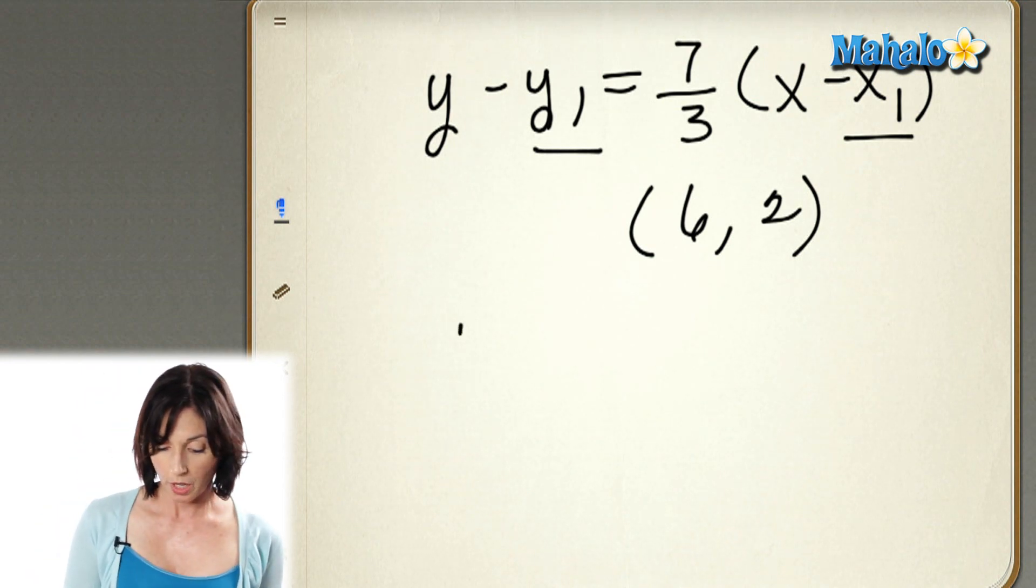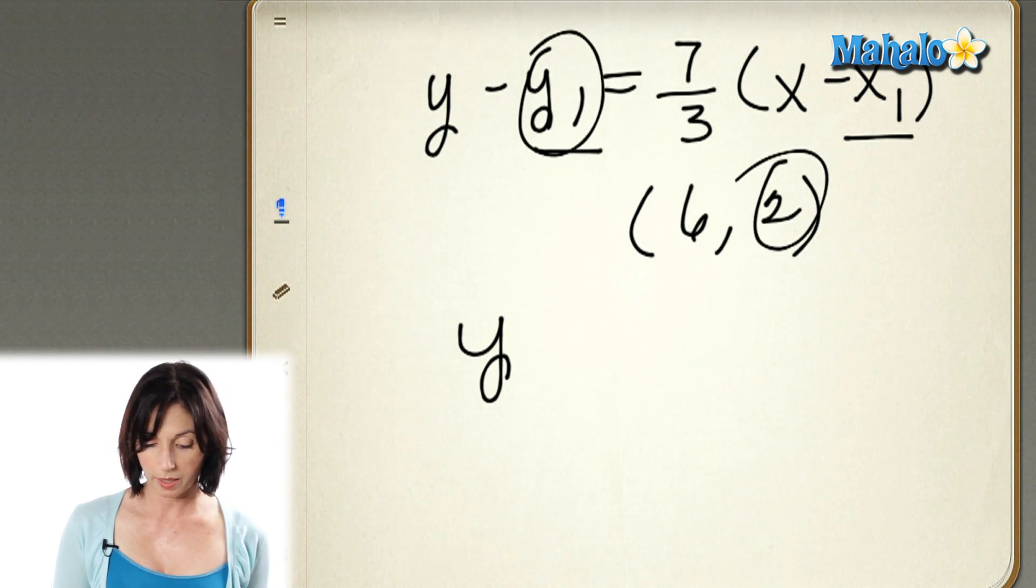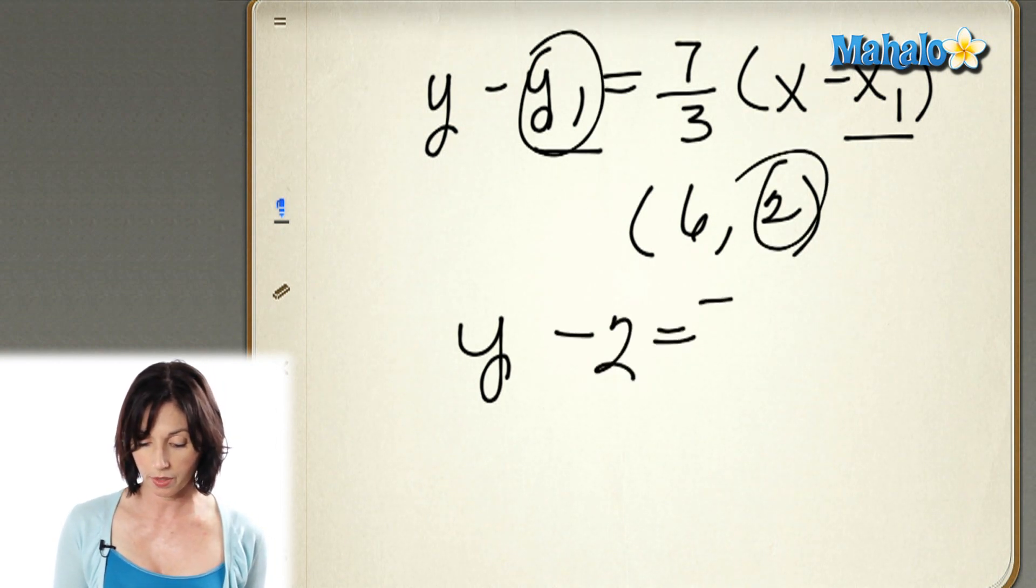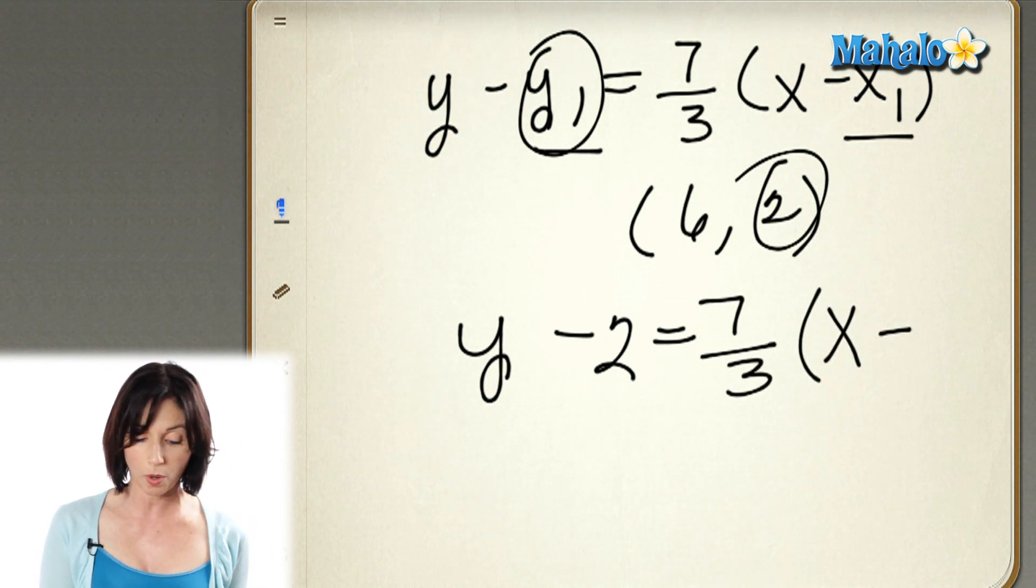So here's what you do. For y1, put in the y coordinate. y minus 2 equals 7 thirds times x minus. Instead of x1, put the x coordinate in, which is 6.